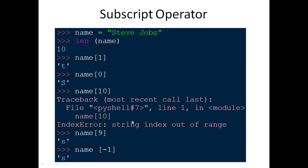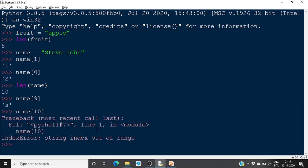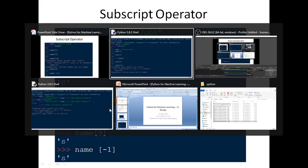You can also try accessing beyond the valid range. If the length is 10 and you try name[10], it will give an error: string index is out of range. So valid indices are from 0 to 9.